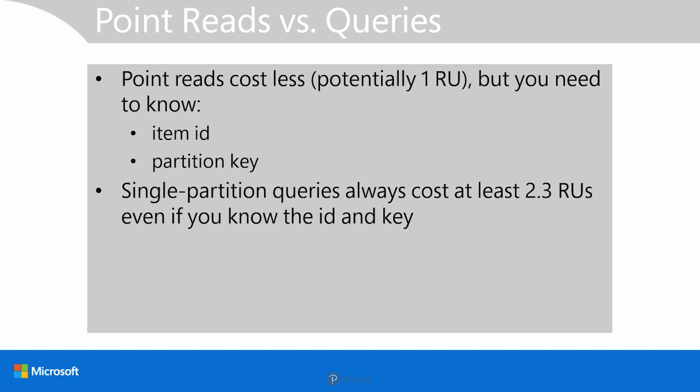Remember, though, that these queries that go into Cosmos DB are deterministic. And each time you run the same exact query, you'll be charged the same RU cost. It's deterministic.